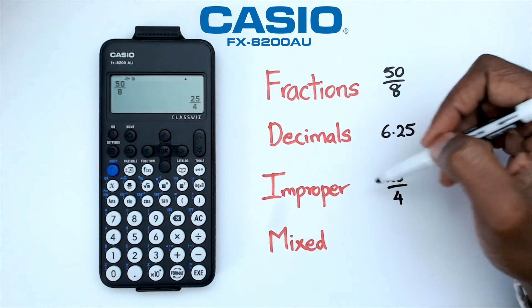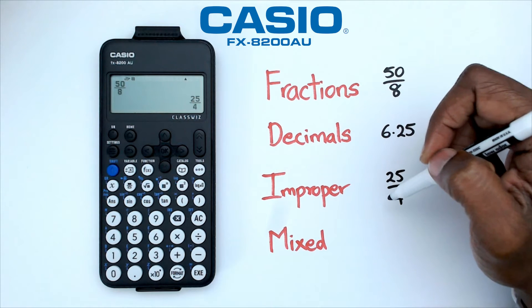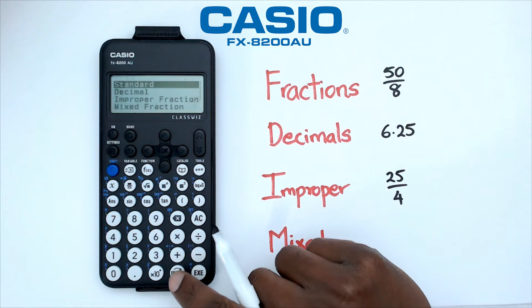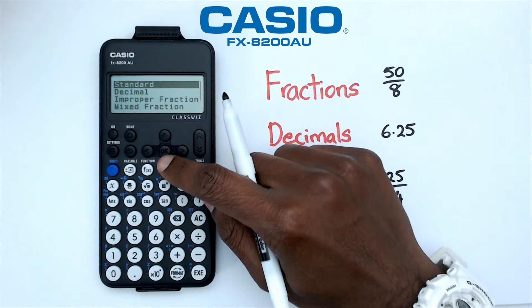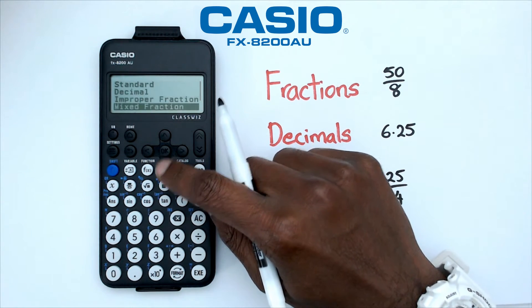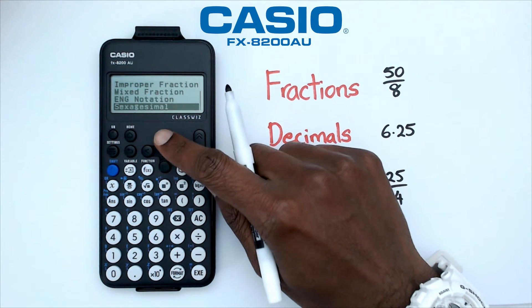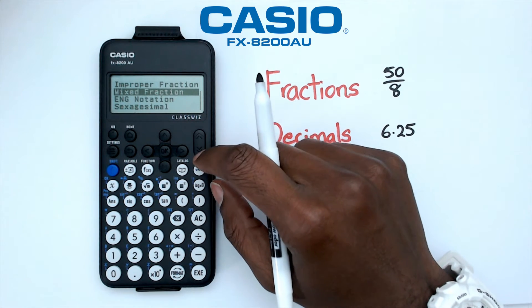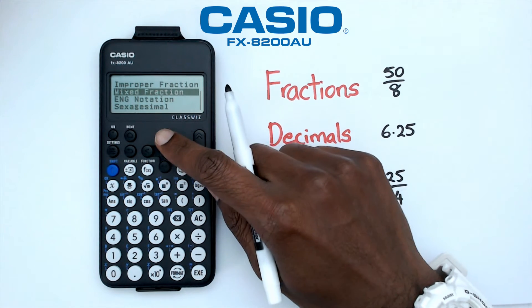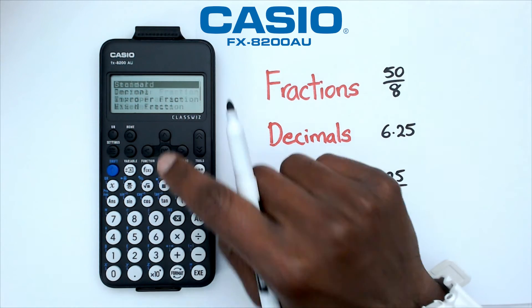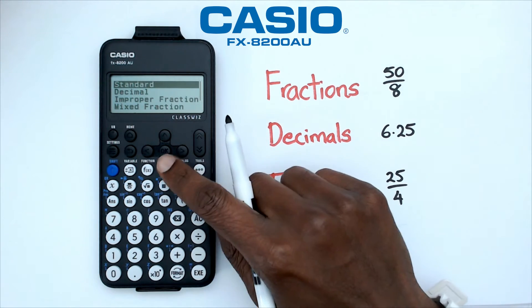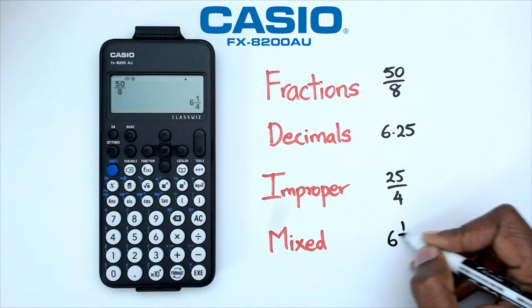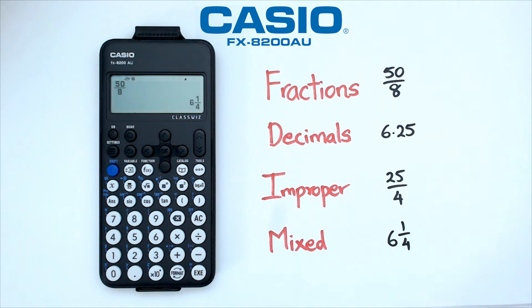But let's say we want to convert this improper fraction into a mixed fraction. To do that, click on the Format button. A few options come up — we're going to go into Mixed Fraction. There are other options which I've made videos for, available in the How to Casio playlist on my channel. We go down to Mixed Fraction, press equals, and that gives us 6 and one quarter.